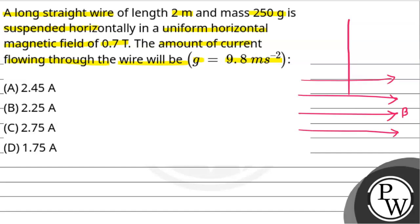Its length is equal to 2 meters and mass is equal to 250 grams. The magnetic field strength given is 0.7 tesla and value of g, the constant value g, is given. So we have to find out the amount of current which is flowing through this wire.